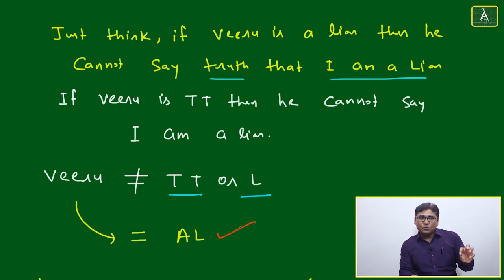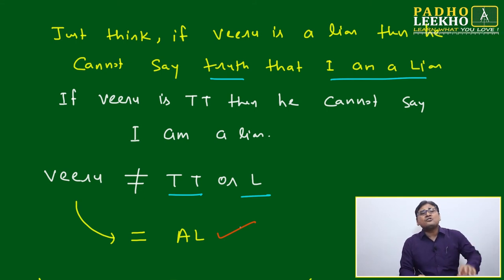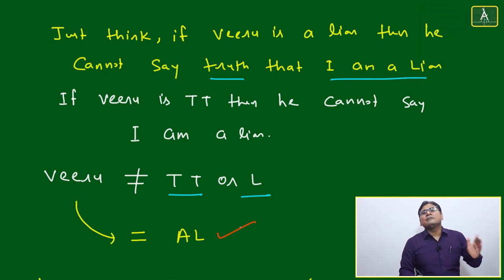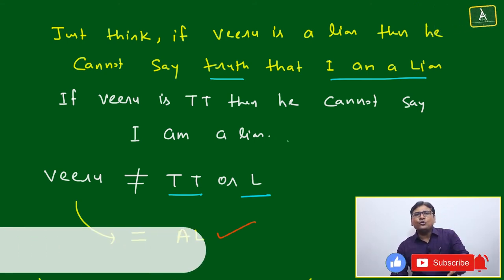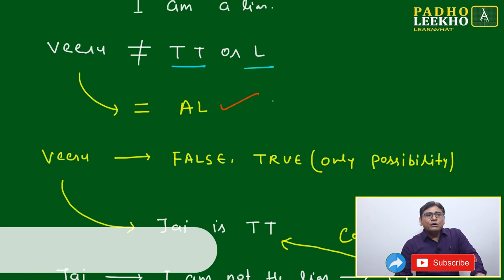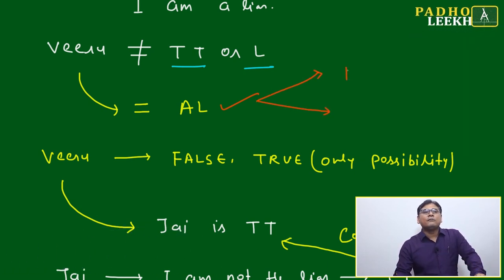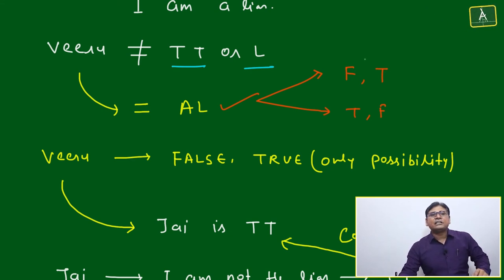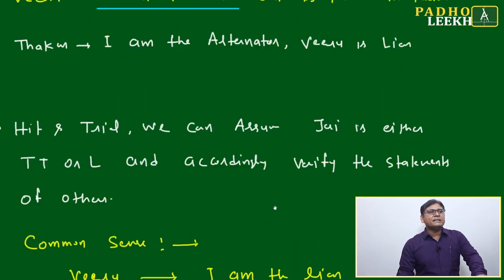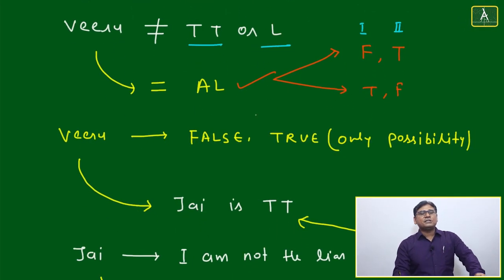That is the only compromise: if Viru is a truth teller there is a conflict; if he is a liar there is also a conflict. So the best solution is Alternator — one statement true, one statement false. If Viru is an Alternator, two options exist: his statements are false-true, or true-false. His second statement is 'Jay is the truth teller.'